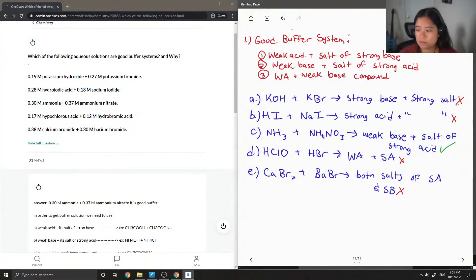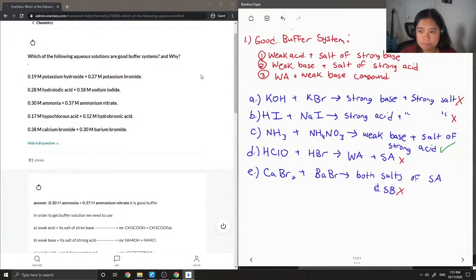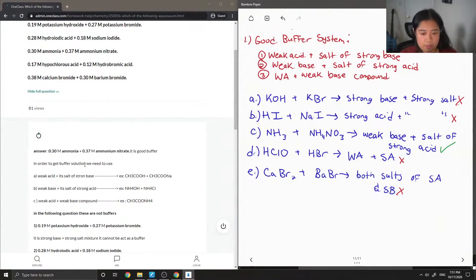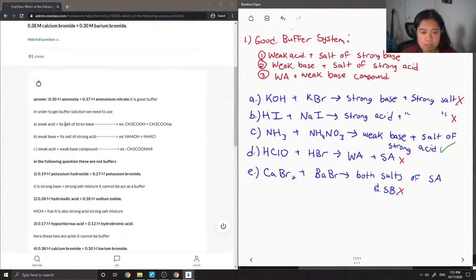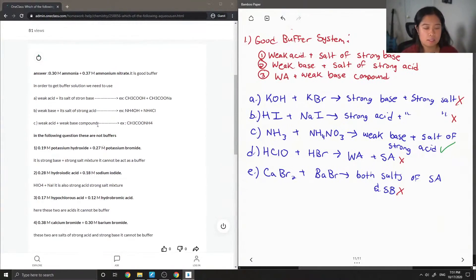Let's look at the answer from our junior tutor. So in order to get buffer solution, we need to use weak acid plus its salt of strong base. And then they give examples, weak base and its salt of strong acid, or weak acid plus weak base compound. So that's what I said as well. And then they also selected just ammonia and ammonium nitrate as the good buffer.